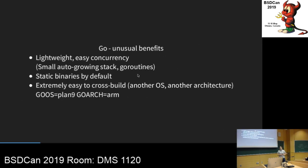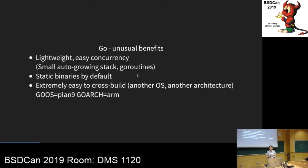Other more unusual things about Go: it has very lightweight concurrency — goroutines — with very small stacks. It makes static binaries by default, which has benefits: you can compile a binary and not need anything else for it to run. And it's extremely easy to cross-compile. If you want to build for Plan 9, just set the target OS and architecture. You can even build for weird targets. Just build the binary.